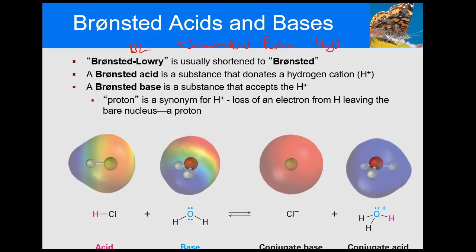You cannot have an acid-base reaction without water. If you take HCl in gas form, it is not an acid — it's hydrogen chloride. But when you dissolve it in water, it becomes an acid because it ionizes into hydronium ions, H3O-plus ions. An H-plus is essentially popping onto a water molecule.